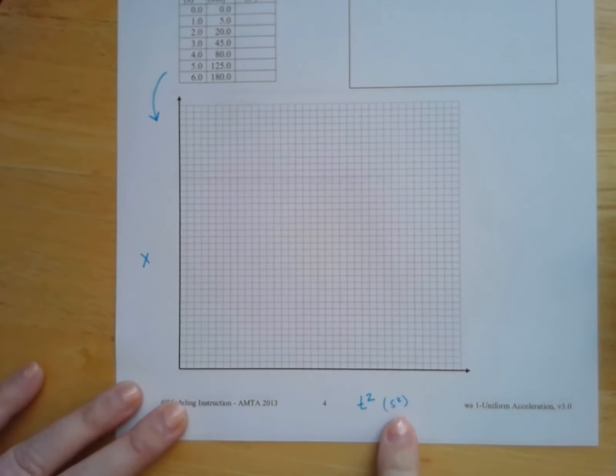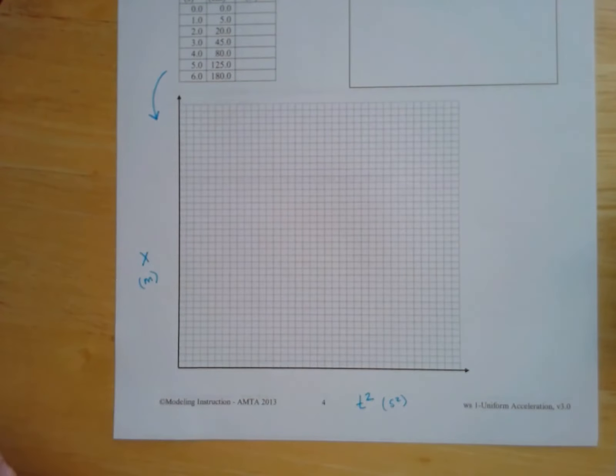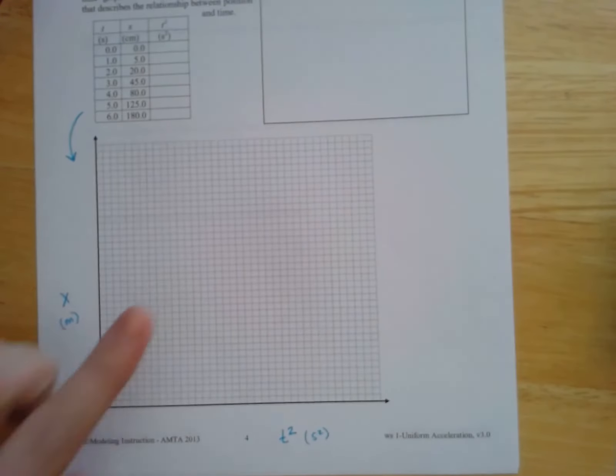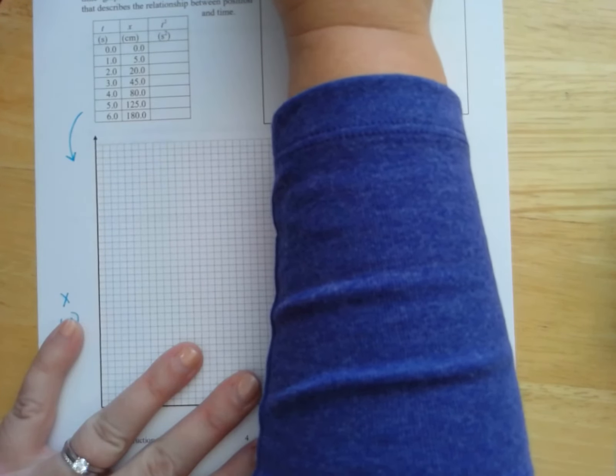And you're going to use this table to make a graph down here of position versus time squared. So it's time squared and the units are seconds squared. This is position and meters. And then once you've made your graph, you can make an equation.